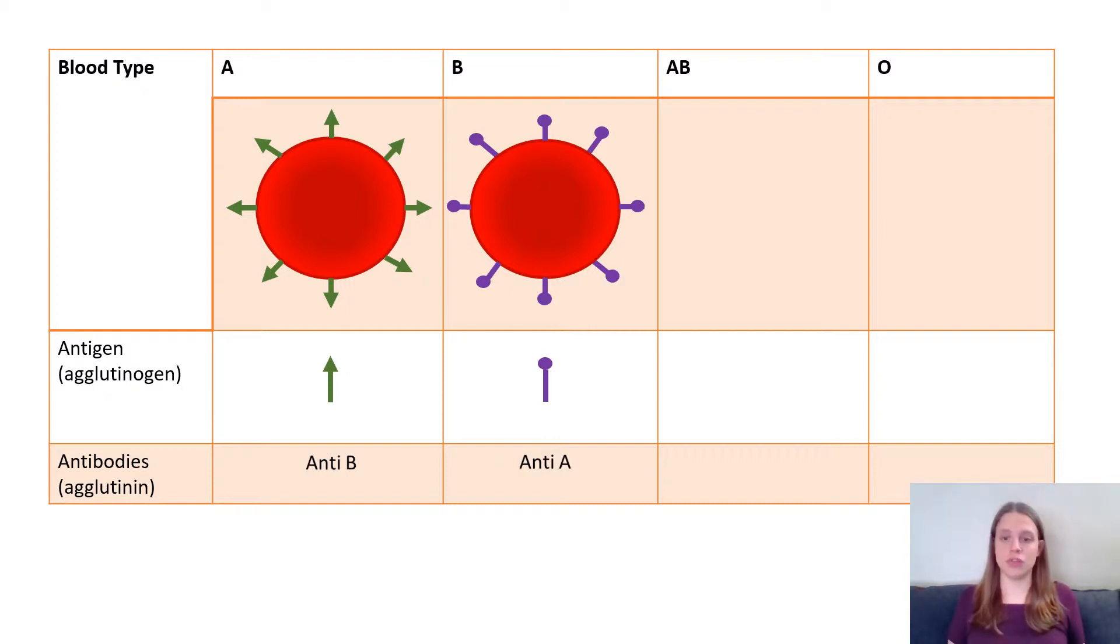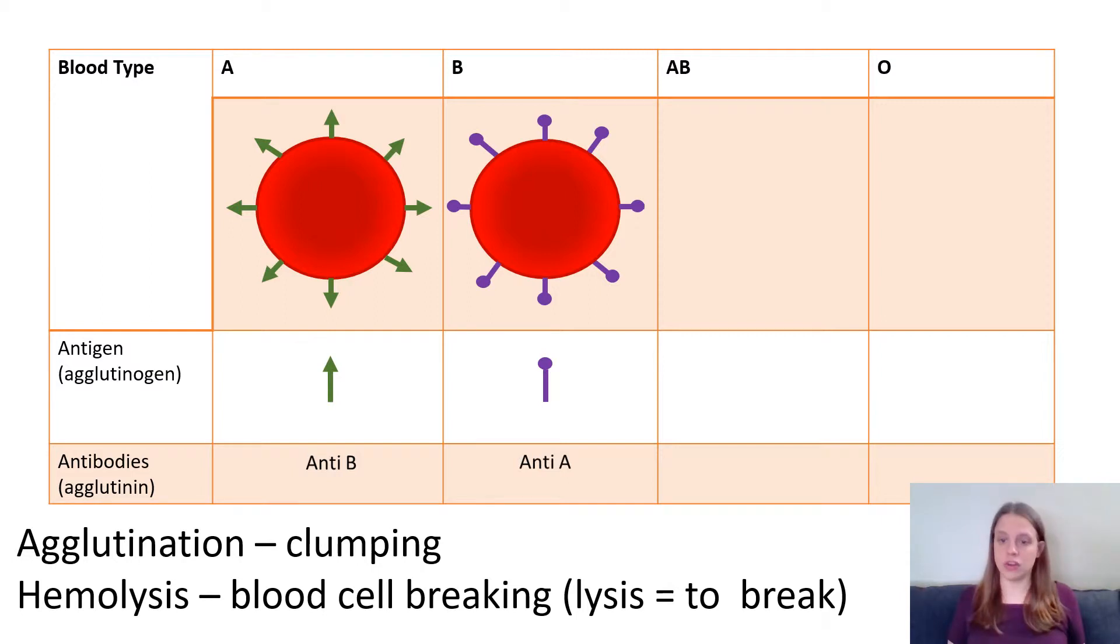And transfusion reactions lead to agglutination which is clumping of the blood due to the anti A or anti B antibodies reacting and binding to the antigens. Which is bad because our blood is supposed to be liquid. We don't want it to be clumping. It also results in hemolysis which is the blood cells actually rupturing open.